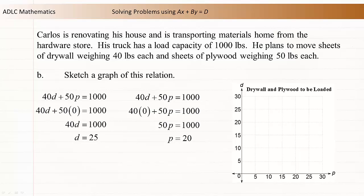The d intercept is 25, so we can plot the point 0, 25. The p intercept is 20, so we can plot the point 20, 0.